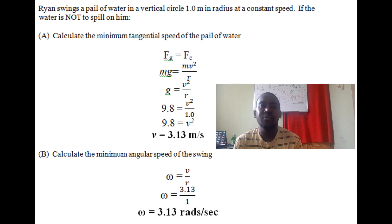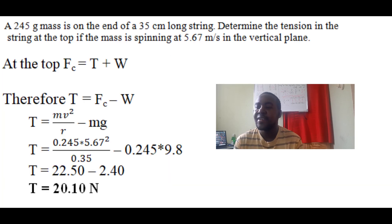Last question: A 245 gram mass is on the end of a 35 cm long string. Determine the tension in the string at the top if the mass is spinning at 5.67 m/s in a vertical plane. Remember, this is our last topic from yesterday.